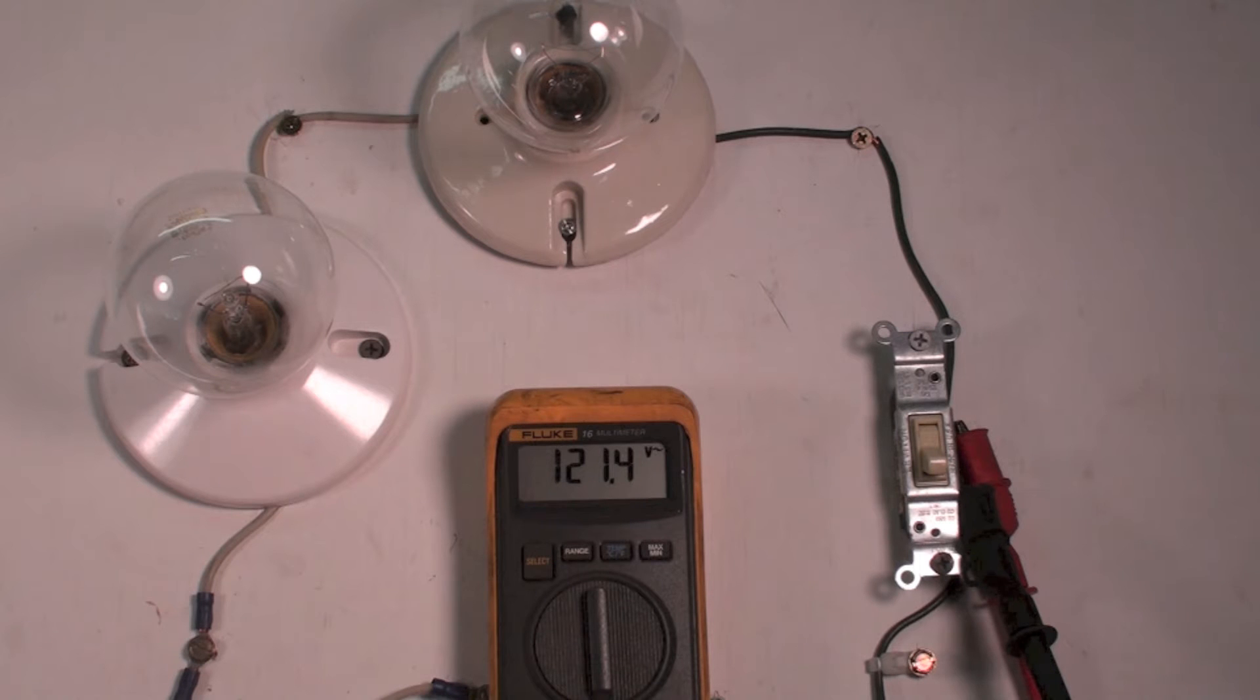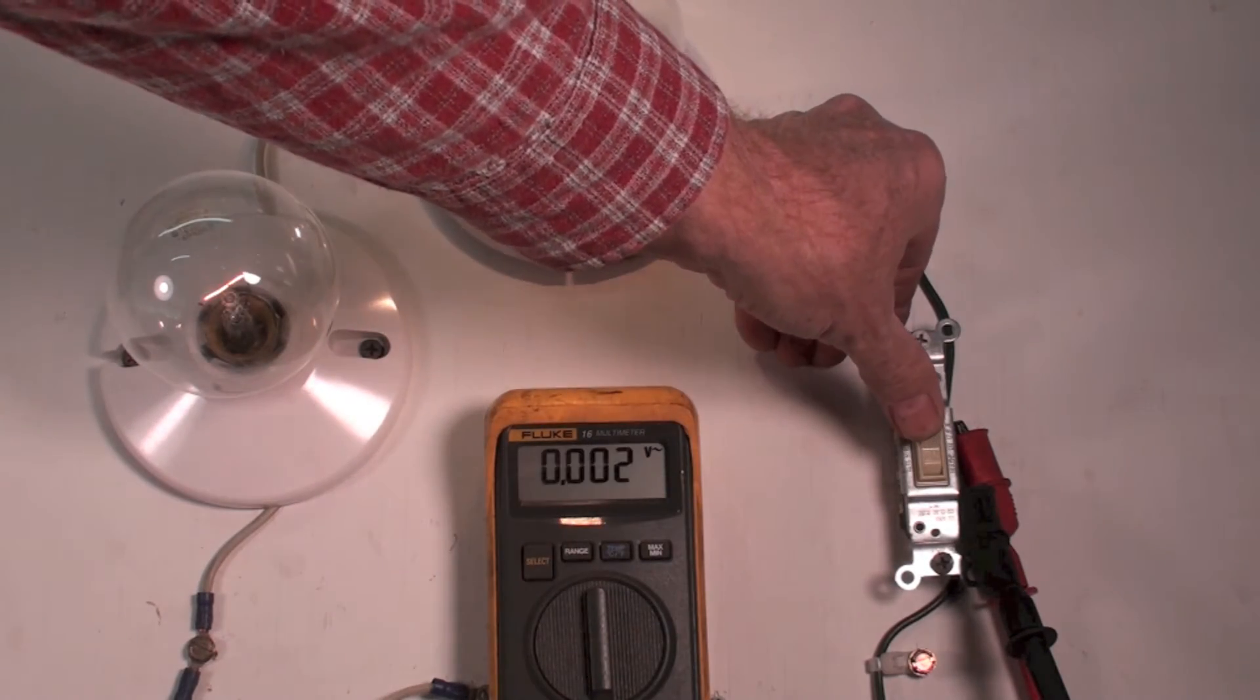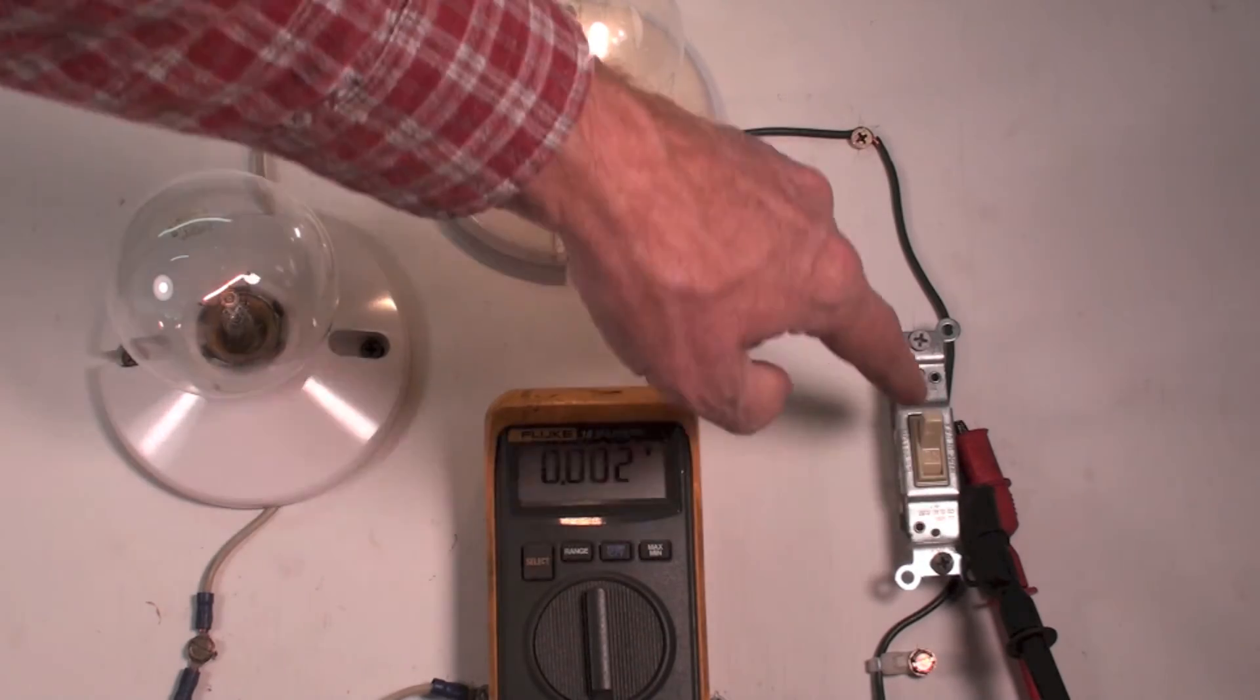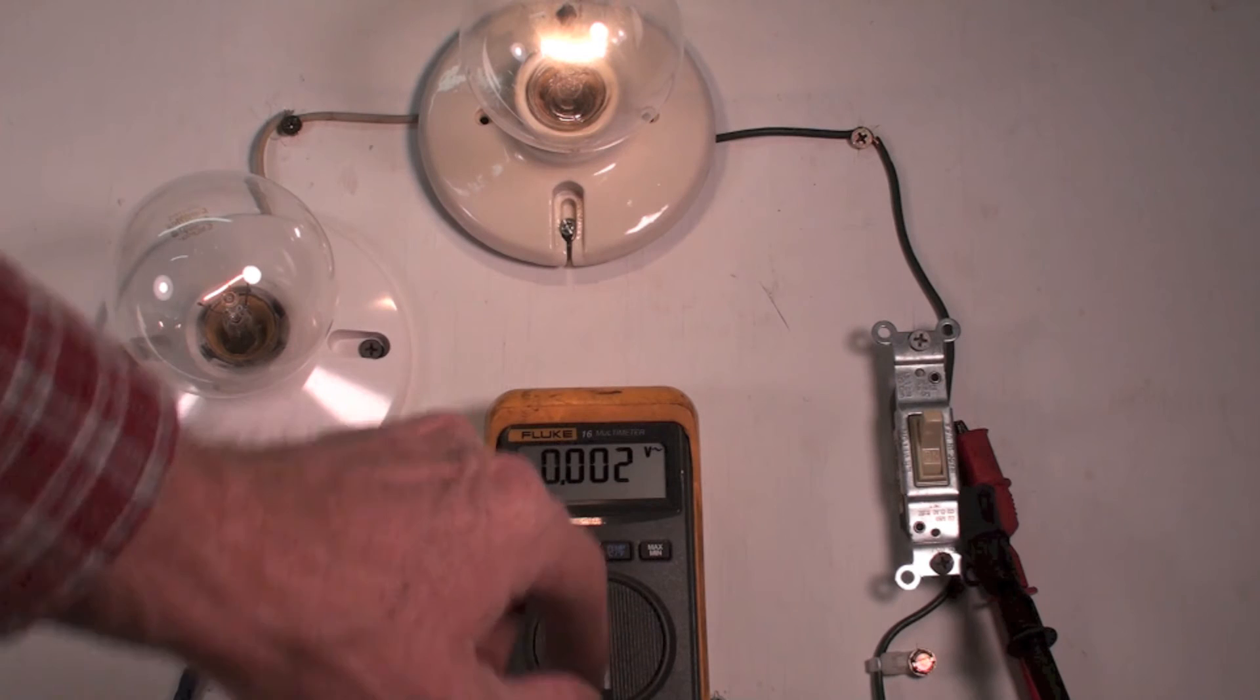Now we're going to go ahead and turn this on. And of course when we turn this on, first thing that happens is the meter is reading the voltage drop across the switch, which it can't hardly read it.